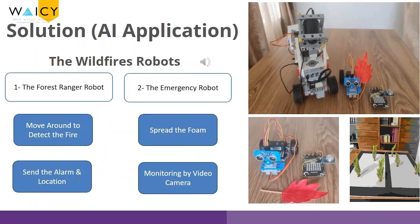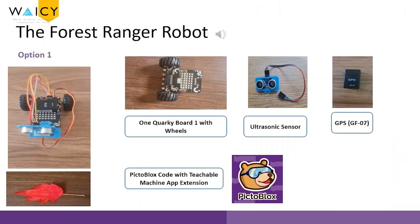The forest ranger robot moves around to detect the fire, sends the alarm and location. The emergency robot sprays the fire and provides monitoring by a video camera.